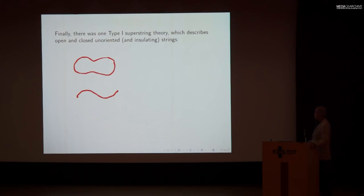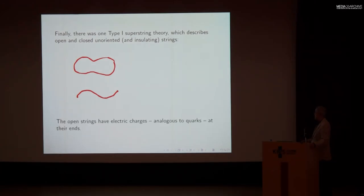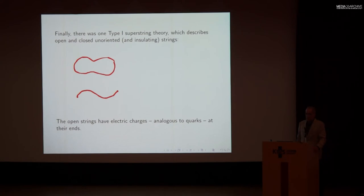In type I theory, here's a closed loop without an arrow, and here's a piece of open string. The open string has electric charges at its ends, somewhat similar to quarks. In fact, in a sense this analogy is how string theory was discovered, as David mentioned.